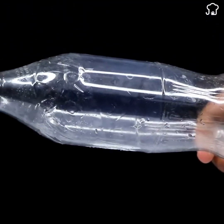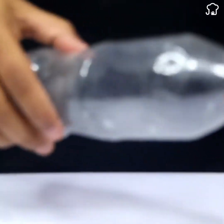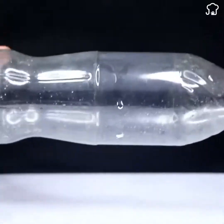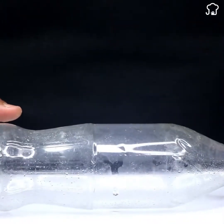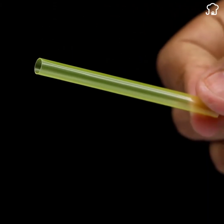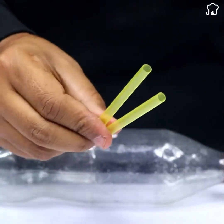After that, we'll take another empty plastic bottle that is more or less the same size as the previous one. Using a glue gun, we will attach two straws at both ends of the bottle, as shown on the screen.